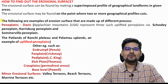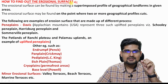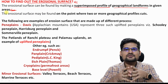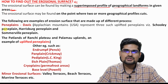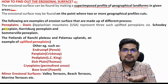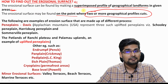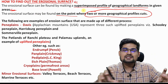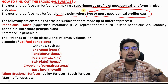It is important to understand how to find erosional surfaces. The method involves making a superimposed profile of geographical landforms in a given area — all landforms of various times superimposed together. This gives us polycyclic landforms and stories of different evolutions. Erosional surfaces may be found at the point where two or more geographical profiles cut together, as each profile represents the entire erosional structure from youth to old stage.